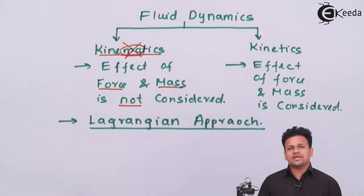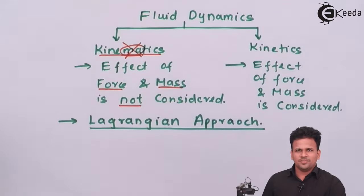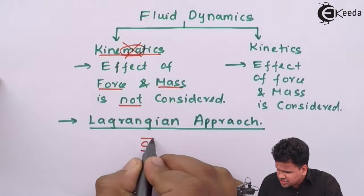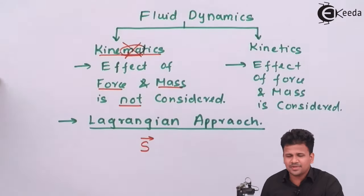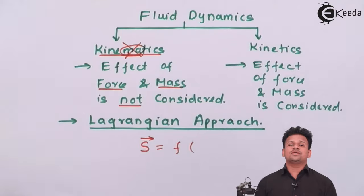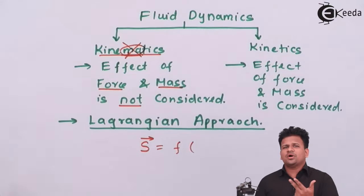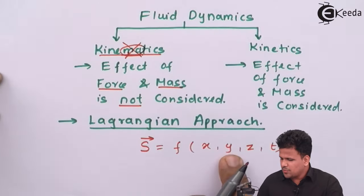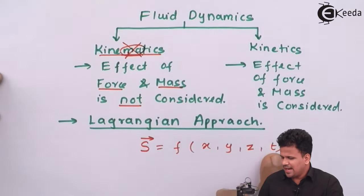But this entire process of calculating displacement, velocity, and acceleration becomes very difficult. Hence, the entire approach can be summed up into one vector formula: the position vector is a function of its spatial coordinates — that is rectangular coordinates x, y, and z — and the fourth coordinate is time. So it is a function of x, y, z, and time.